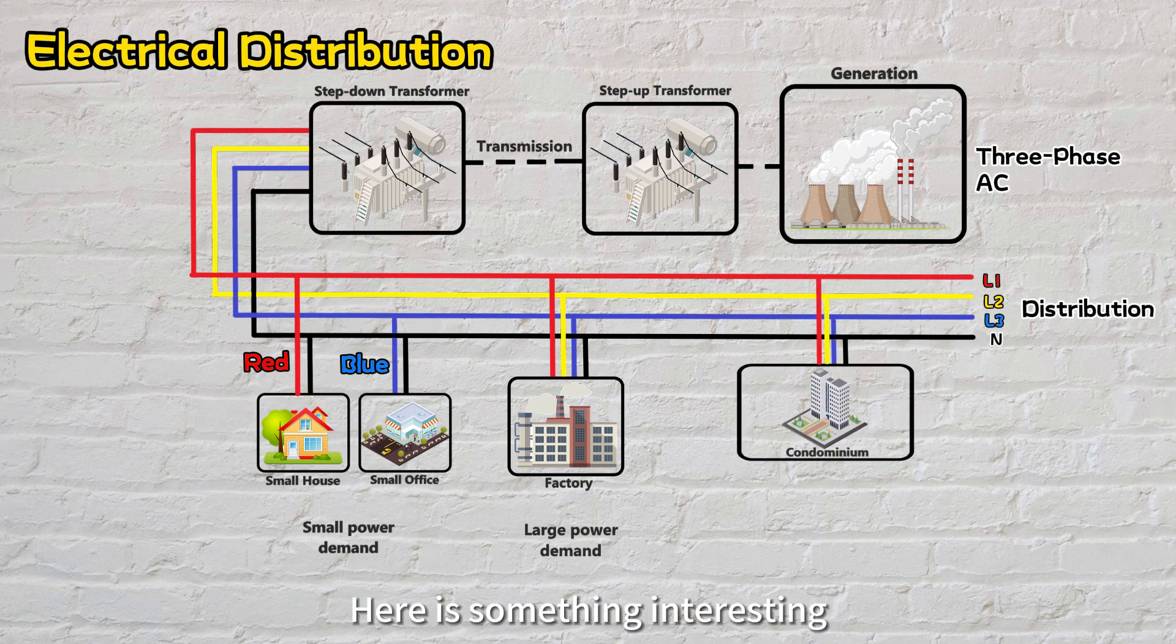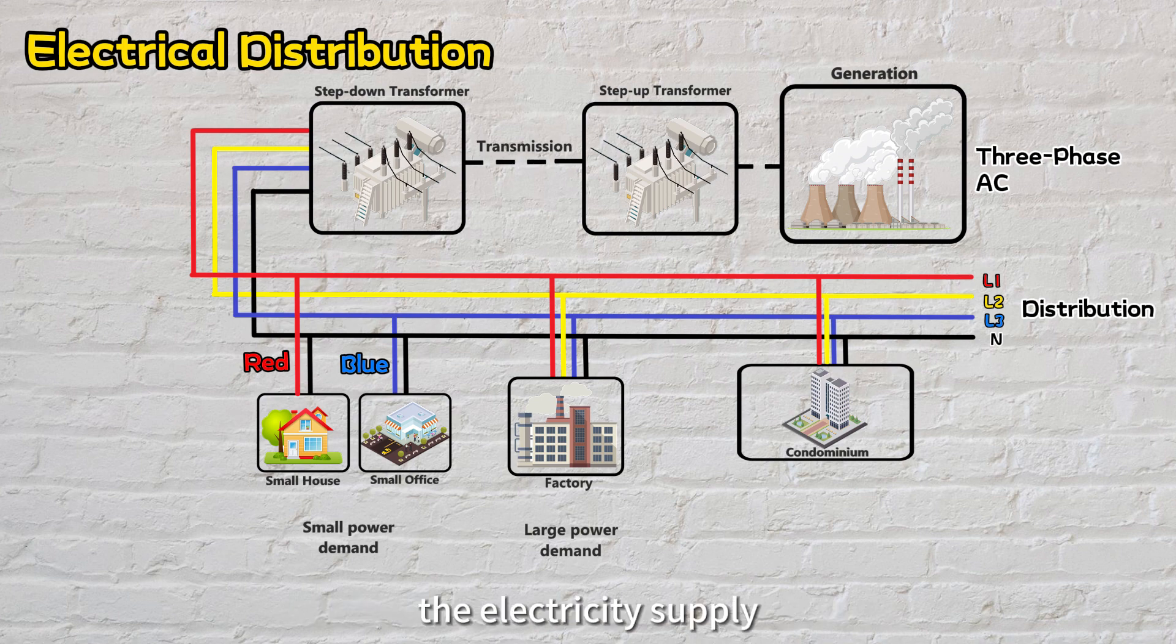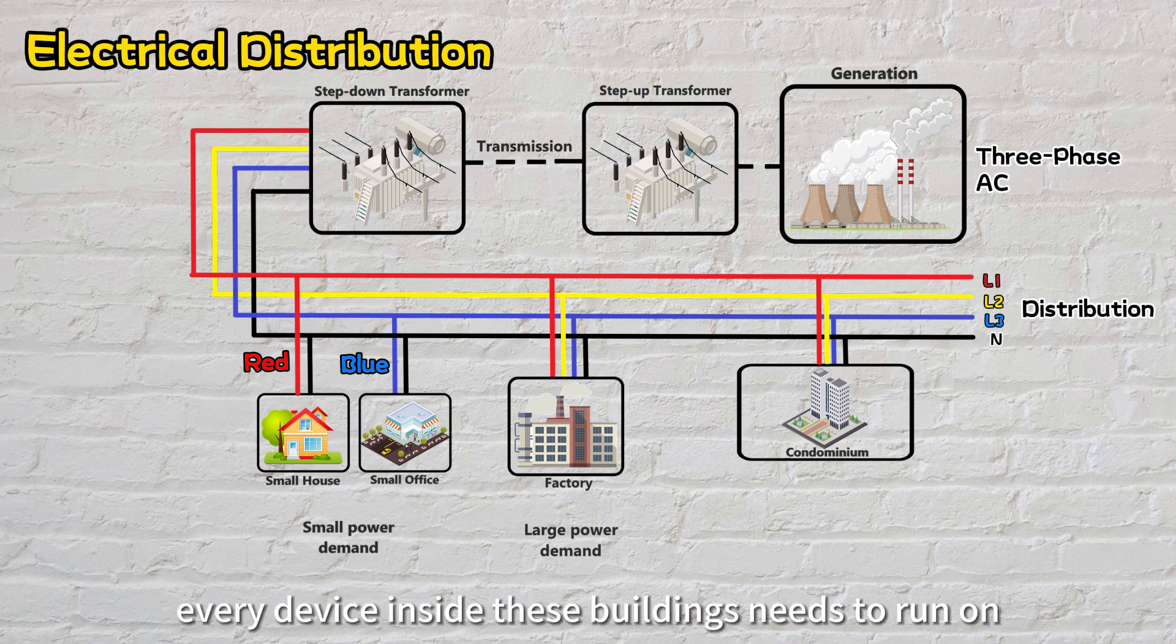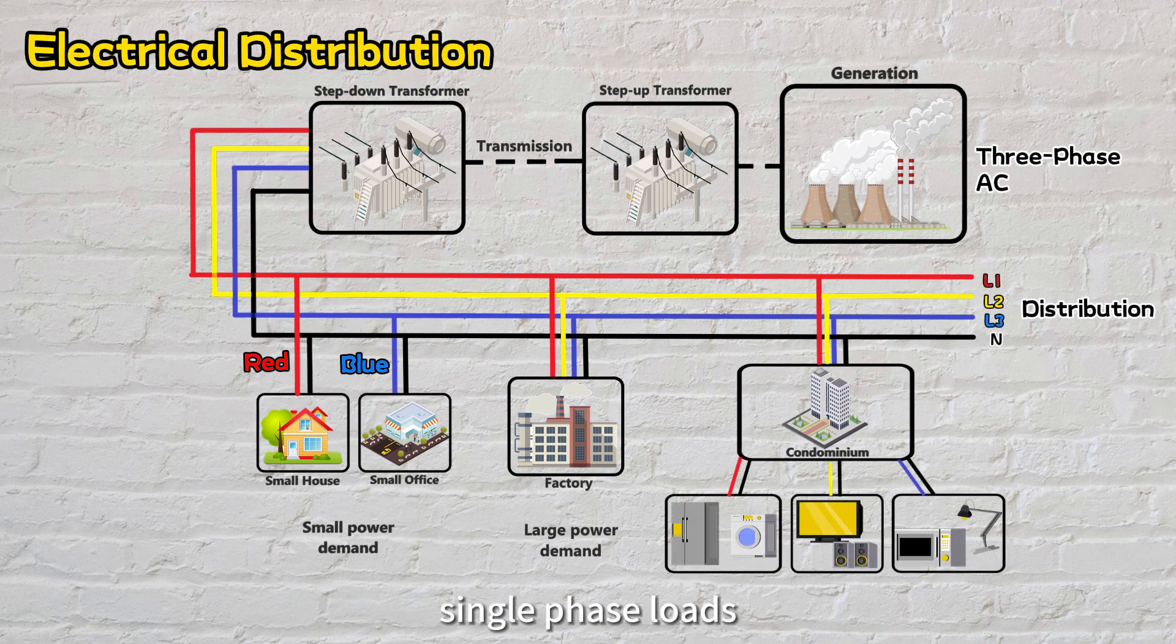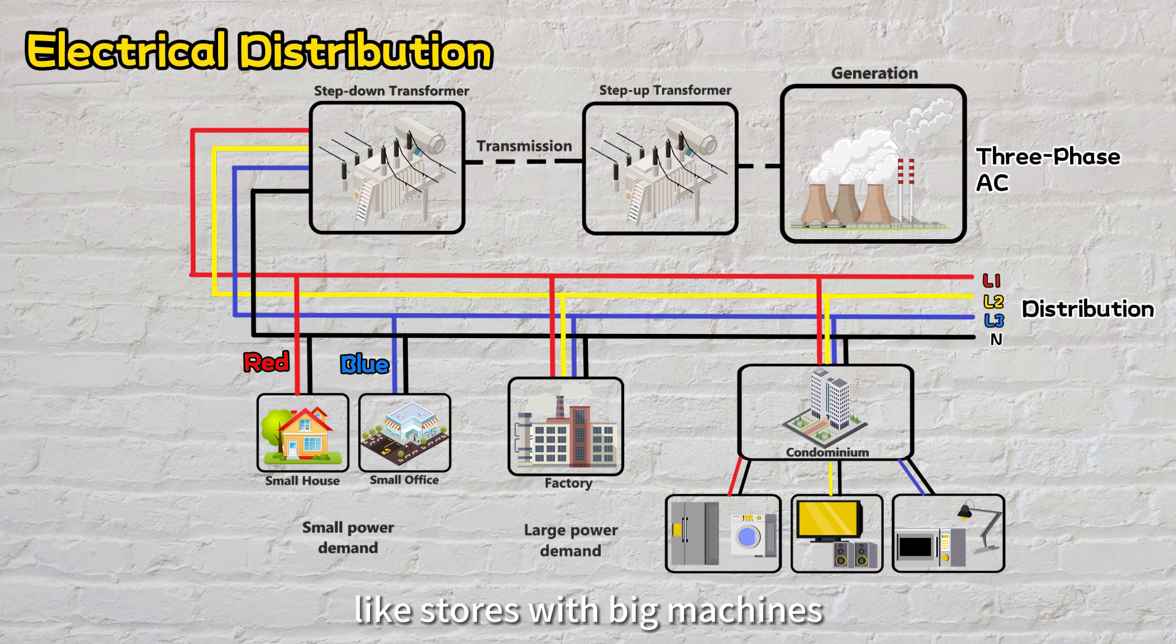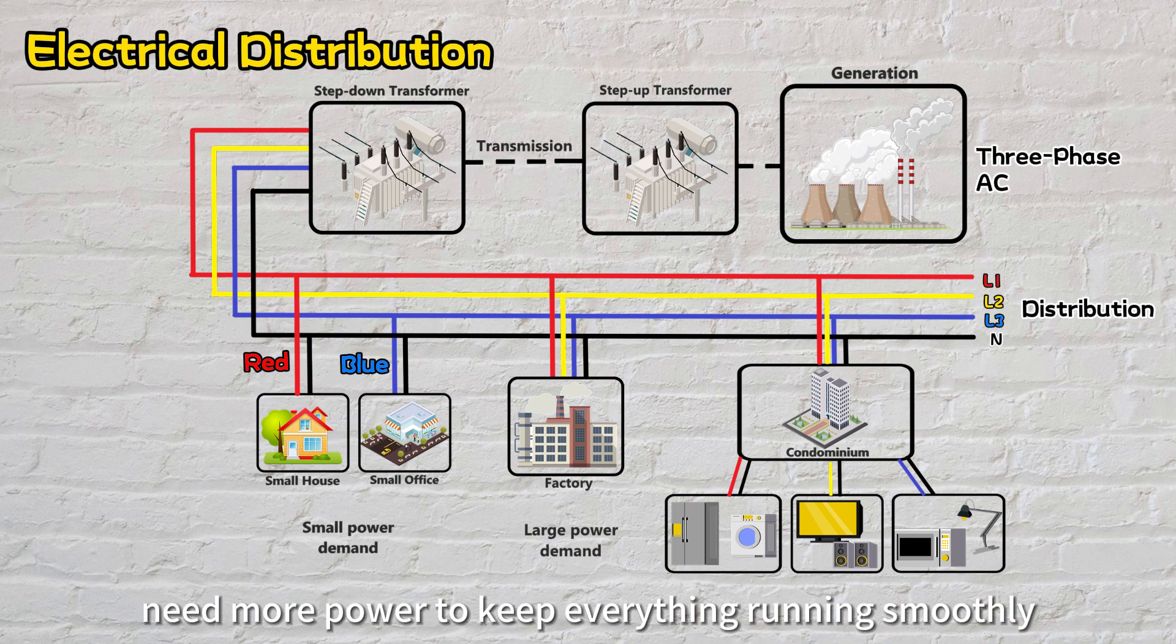Here's something interesting - in some homes, condominiums, and commercial shops, the electricity supply can be set up as a three-phase system. But that doesn't mean every device inside these buildings needs to run on three phases. Instead, single-phase loads are spread out over these three phases. This helps because some places, like stores with big machines or homes with lots of gadgets, need more power to keep everything running smoothly.